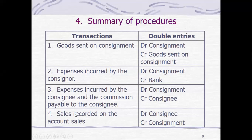For sales recorded on the account sales report, this would be a debit to the consignee's account — which is the receivable, increasing that account — and then a credit to the consignment account.